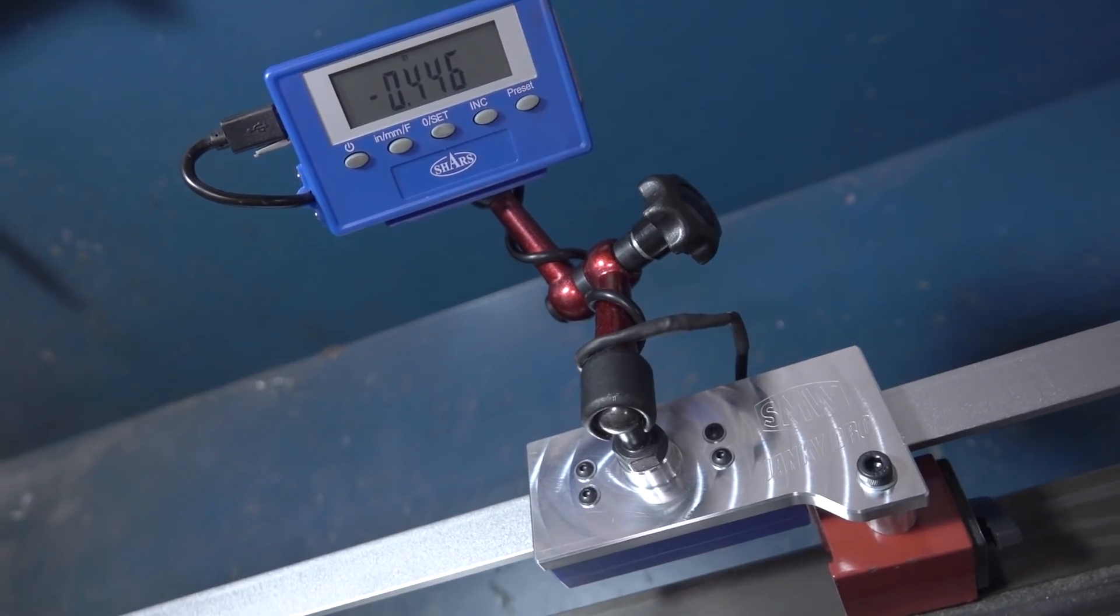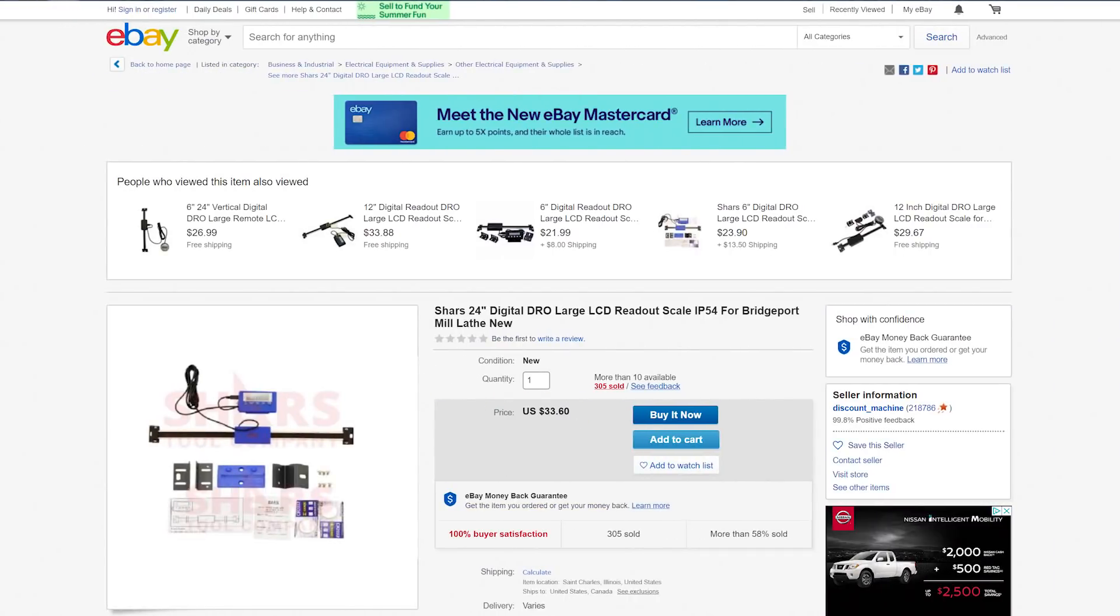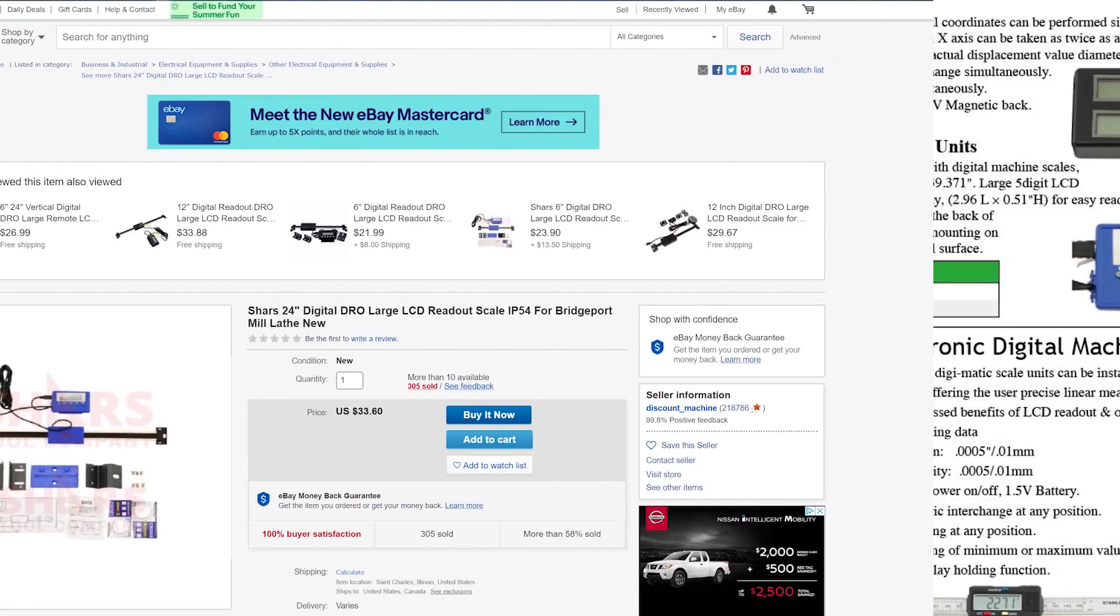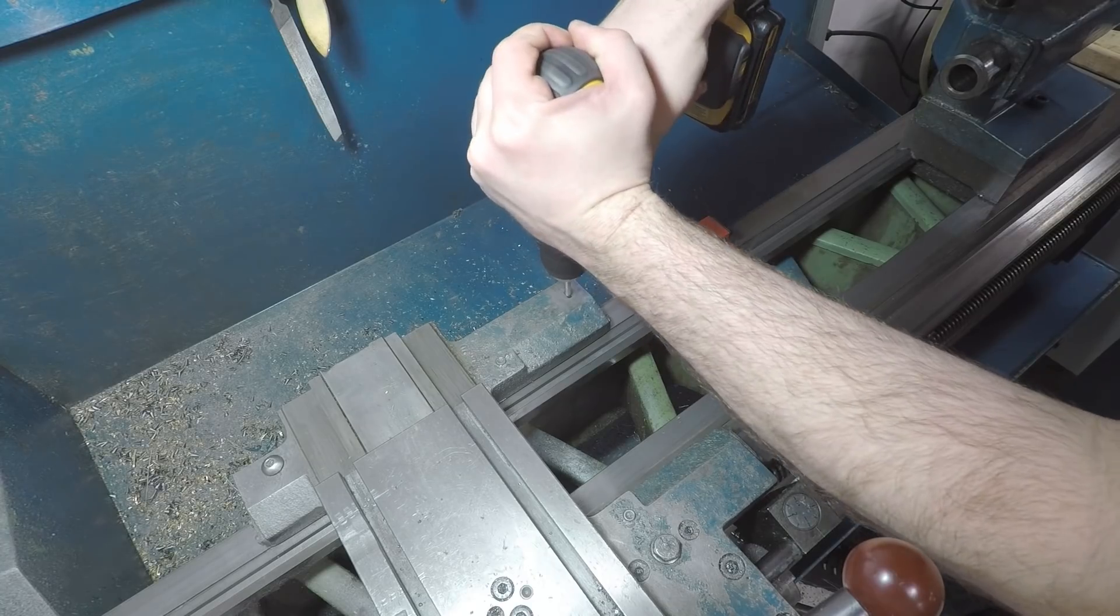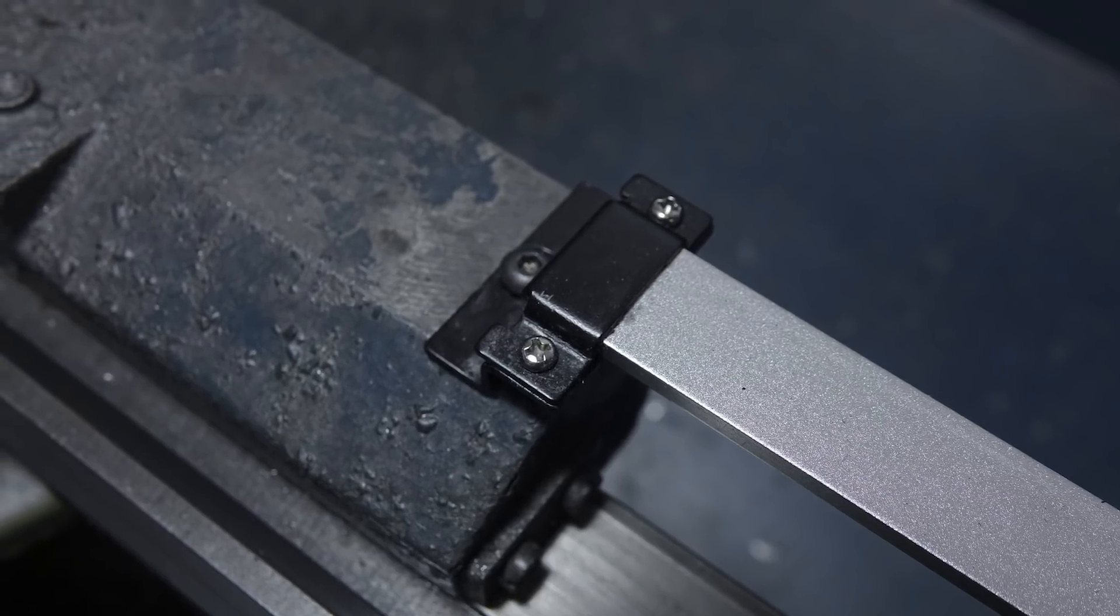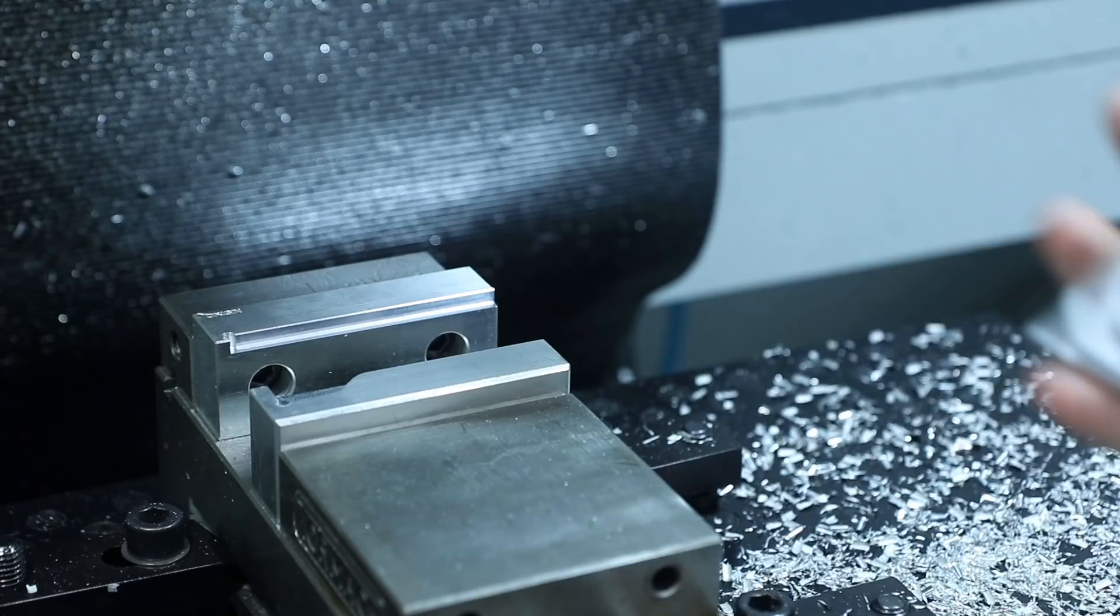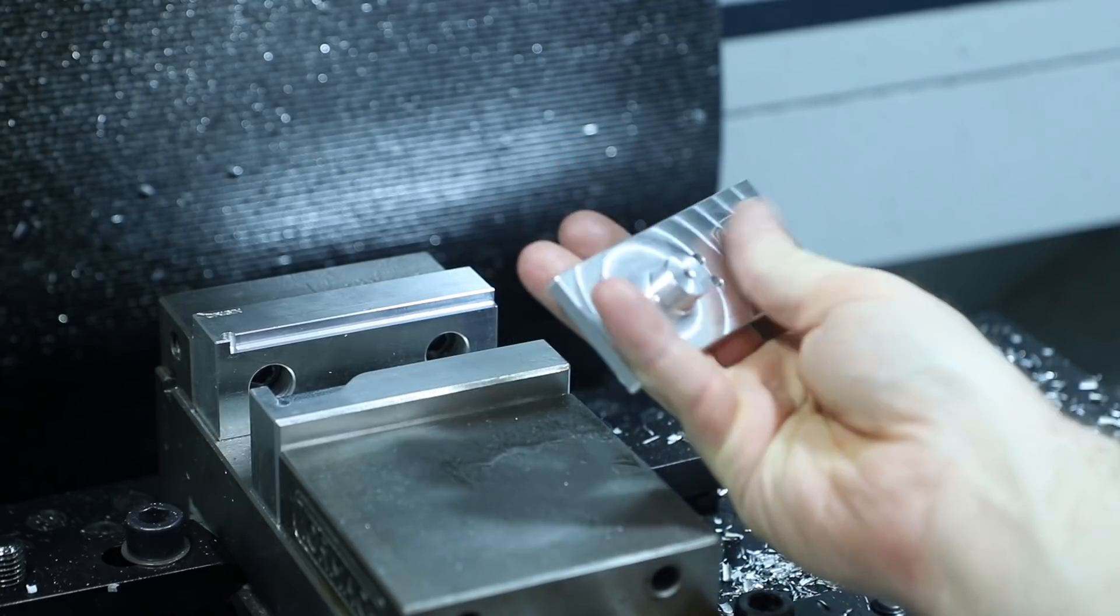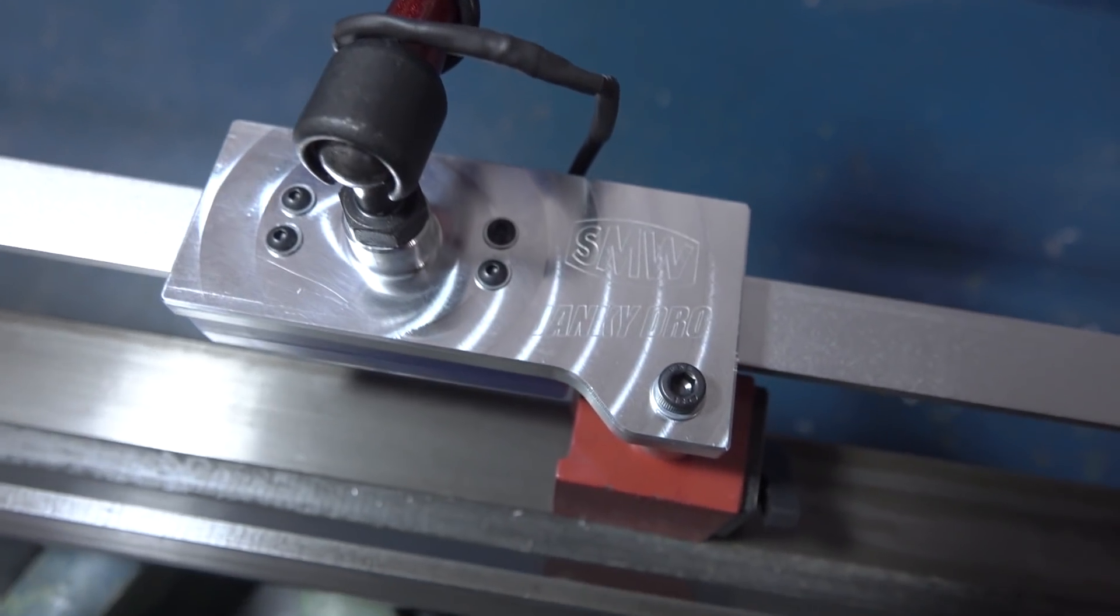So we wanted to throw a quick, cheap DRO on it. We found this Shars unit and came up with a really easy, somewhat novel way of mounting this to the machine using just one screw hole in the carriage and a small cheapo mag base to secure the scale to the bed of the lathe. We needed this adapter plate to go between the scale and that mag base. So that's what we'll be making today. Welcome to another Wednesday Widget.